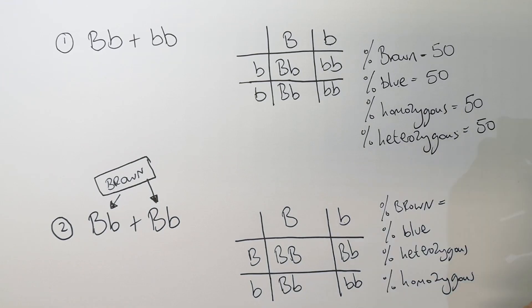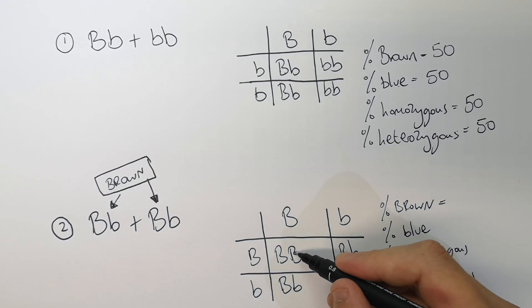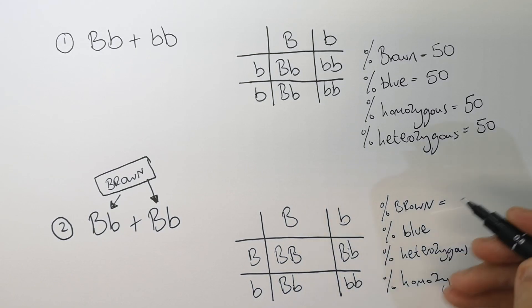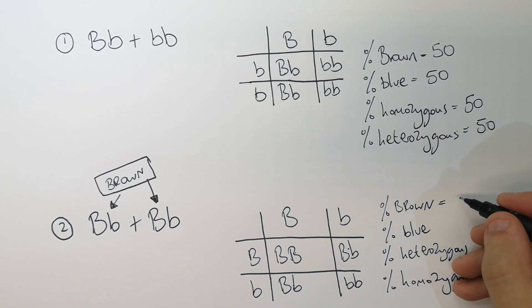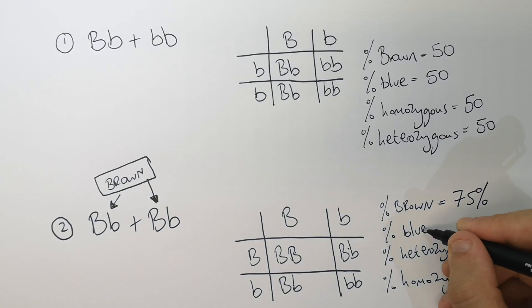Pause the video now to attempt to figure out the percentage chance of brown, blue-eyed, heterozygous or homozygous genotypes. The probability of a brown-eyed child is going to be 75%, because in three out of four combinations the big B allele is present. Remember, the big B allele will always be dominant over the recessive blue eyes, so the percentage chance for brown eyes is 75%.